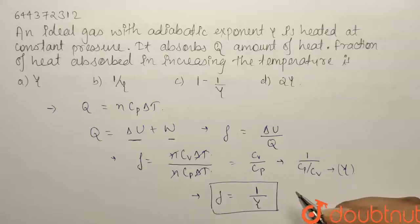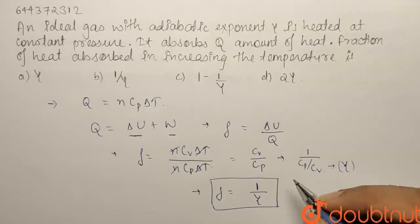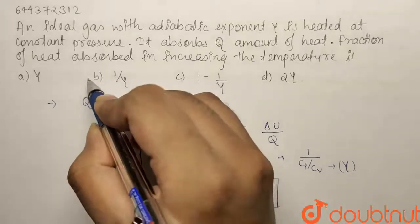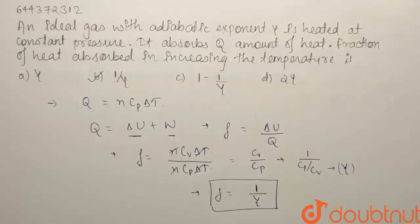So the fraction of energy that is being passed on to the internal energy is equal to 1 by γ, that is our option B. So our option B is the right answer.